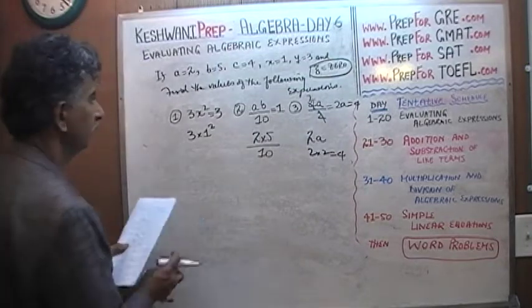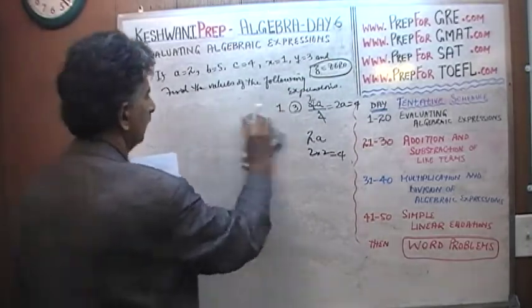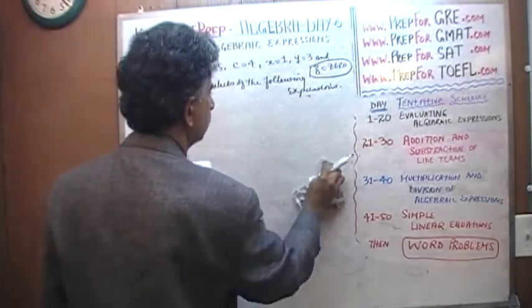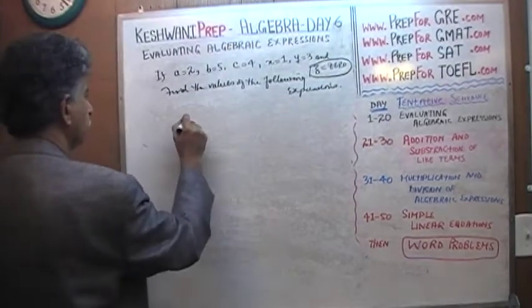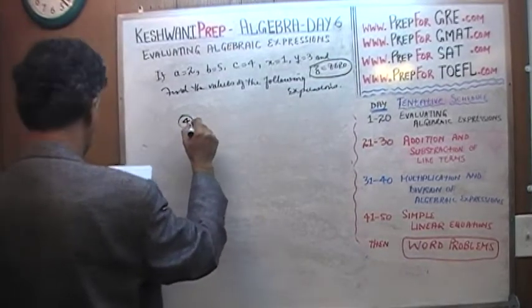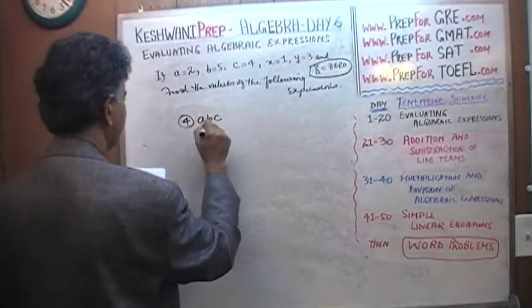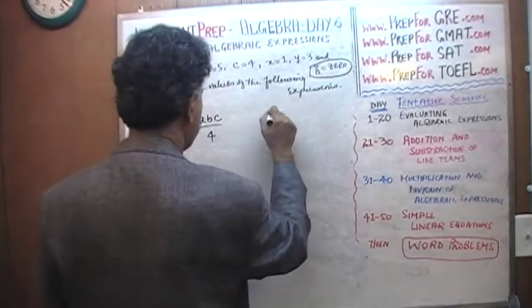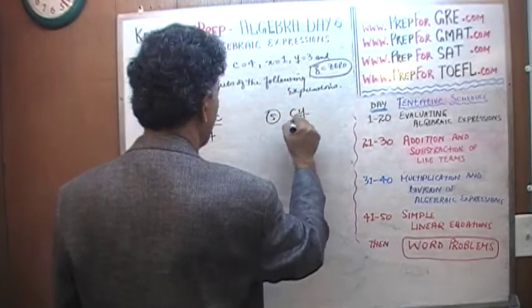Let's move on then. Number 4, A times B times C over 4, and number 5, C times Y over 2.